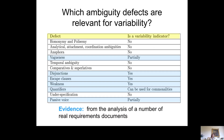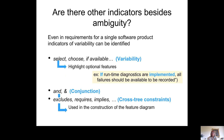We analyzed a number of real requirement documents in previous work and concluded that only some ambiguity defects are relevant for variability, namely: vagueness, disjunction, escape clauses, weakness quantifiers, and partially passive voice.